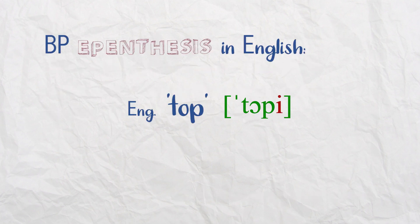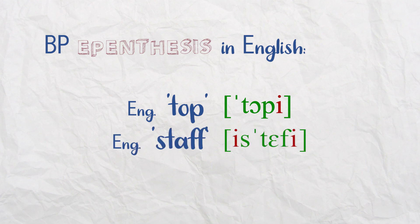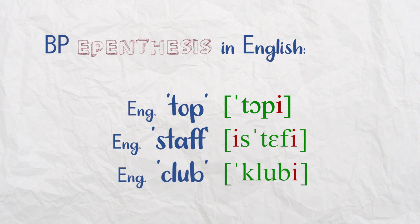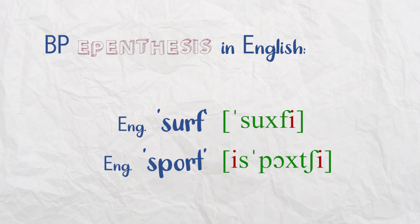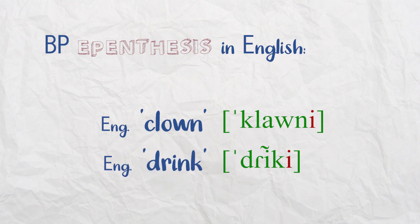So 'top' becomes 'topy,' 'staff' becomes 'istafi' — here we have double E epenthesis. 'Club' becomes 'clubby,' 'surf' becomes 'surfi,' 'sport' becomes 'spohchi.' Again you see /t/ becomes /tʃ/ through palatalization. 'Clown' becomes 'clowny,' 'drink' becomes 'drinky.' E epenthesis everywhere.